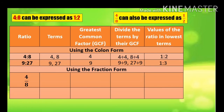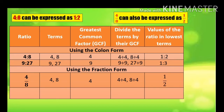Now let's study using the fraction form. The ratio in fraction form is 4 over 8. The terms are 4 and 8. What is the GCF of 4 and 8? The GCF is 4. When we divide the terms by their GCF — 4 divided by 4 and 8 divided by 4 — the answer is 1 half or 1 over 2.